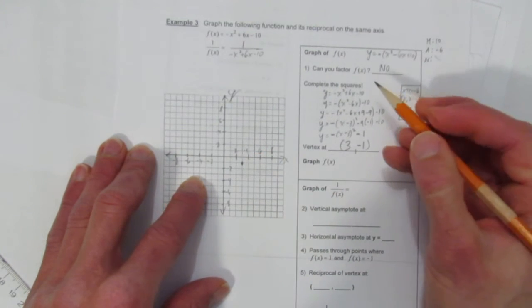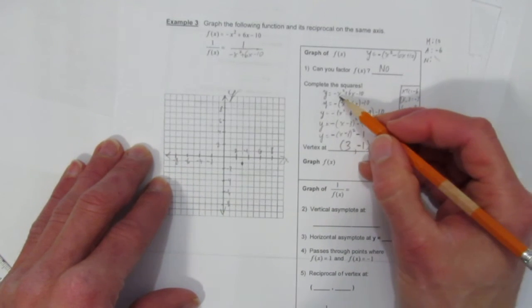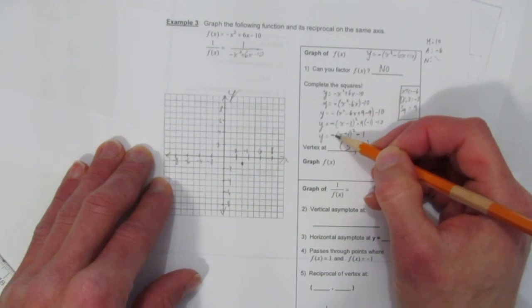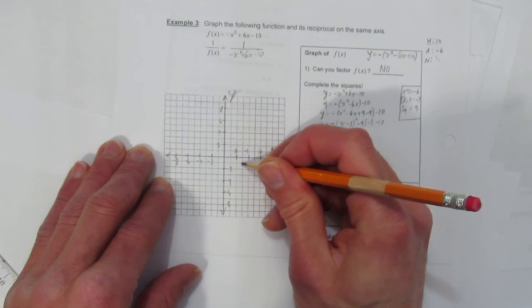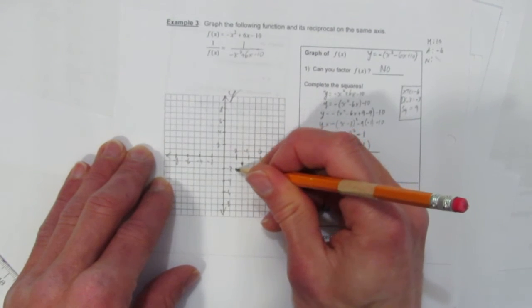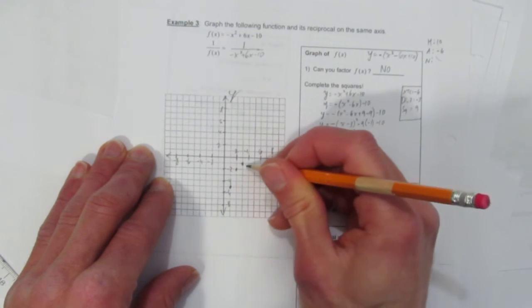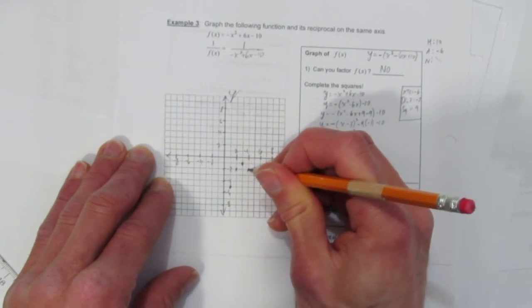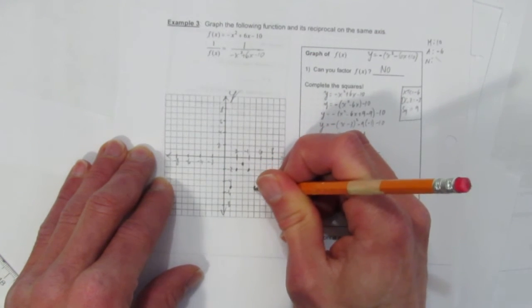And then it's useful to notice the step pattern. You can watch the video on graphing using step pattern. Since the coefficient here is negative, or here, you can look either spot, it's negative, that means the step pattern is negative 1, negative 3, negative 5. So over 1, down 1. Over 1, down 3. Same thing here. Negative 1, negative 3. Over 1, negative 1. Over 1, negative 3.